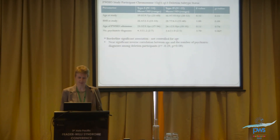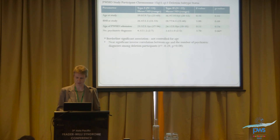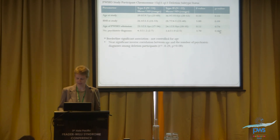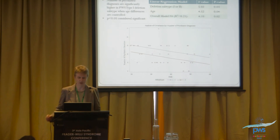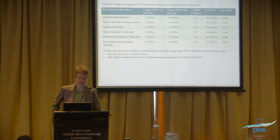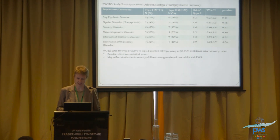Looking just at the deletion subtype, separating Type 1 versus Type 2: the only statistically significant difference in the variables was number of psychiatric diagnoses, which didn't quite reach p=0.05 without age correction. When we controlled for age, we found that Type 1 deletion had significantly more psychiatric diagnoses than Type 2 — consistent with the literature. Looking specifically at the six diagnostic categories in Type 1 versus Type 2, there was no significant difference, though Type 1 was percentually higher in all categories compared to Type 2.